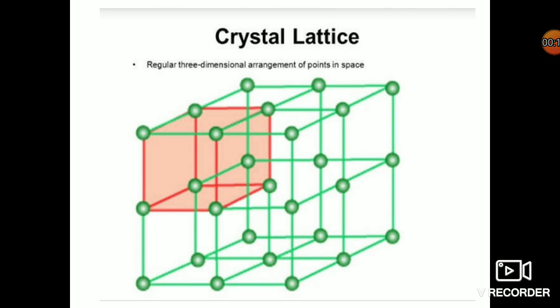In this chapter we'll see what makes a solid crystalline. Whenever we talk about crystalline solids, we know that there is a regular arrangement of the constituent particles — a repeated pattern throughout the solid. In this picture you can see one crystal solid where constituent particles are arranged very neatly in a regular three-dimensional arrangement.